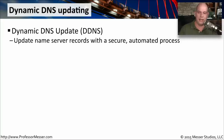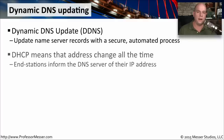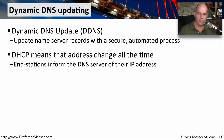This is DDNS. This allows us to update these records in the DNS server in a process that is automated, but perhaps more importantly, it's very secure when this happens. We would use this when we have environments where IP addresses are changing a lot, which is exactly what you would see if you were using DHCP. These devices are changing IP addresses all the time — new devices are coming onto the network, others are leaving — so this would be a very easy way to keep your DNS server updated.